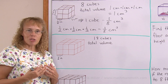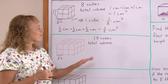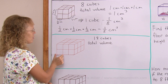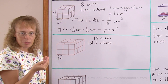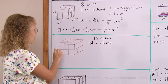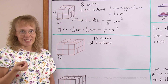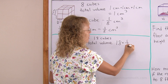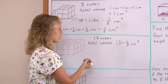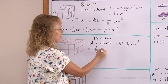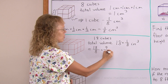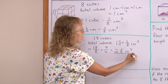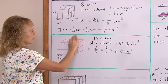We can calculate the total volume one way and then check another way. One of these cubes has the volume of one-eighth of a cubic inch, and there are eighteen cubes. So the total volume is eighteen times one-eighth of a cubic inch. This is the same as eighteen divided by eight, which is the same as nine divided by four — that's two and one-fourth cubic inches. That's the total volume of this rectangular prism.